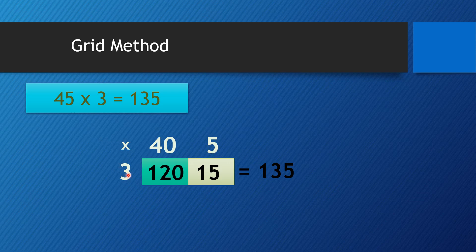Five times three is fifteen. So you need to plus 120 and 15. Plus the ones: zero plus five is five. Plus the tens: two plus one is three. You have one as the hundreds, but you don't have hundreds here, so just copy the one or imagine zero — one plus zero is one. So the answer is 135.